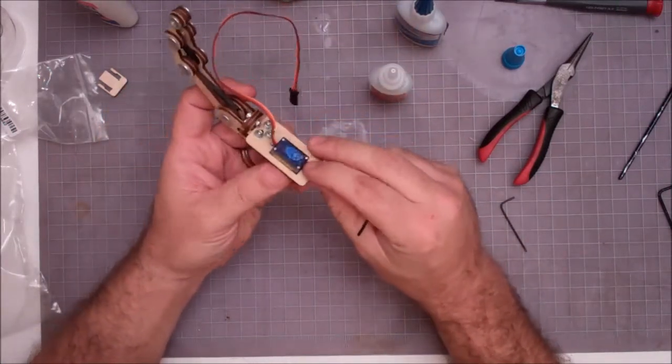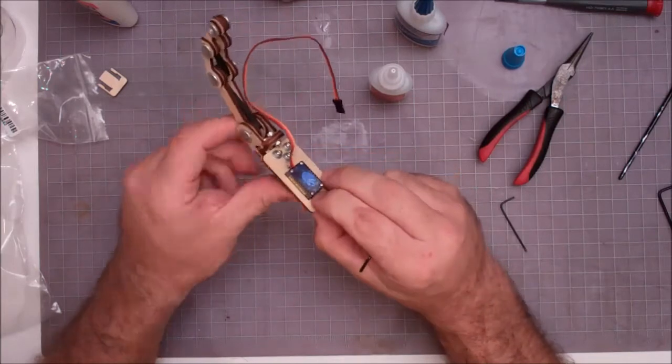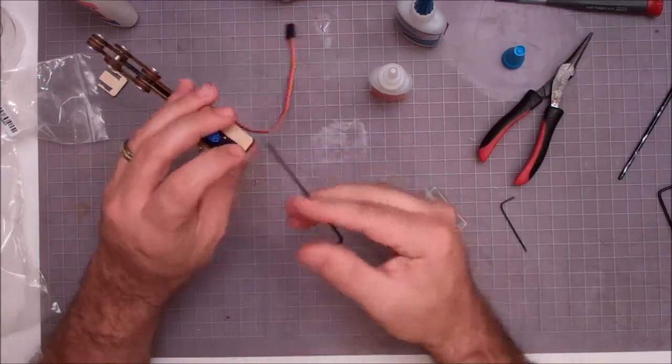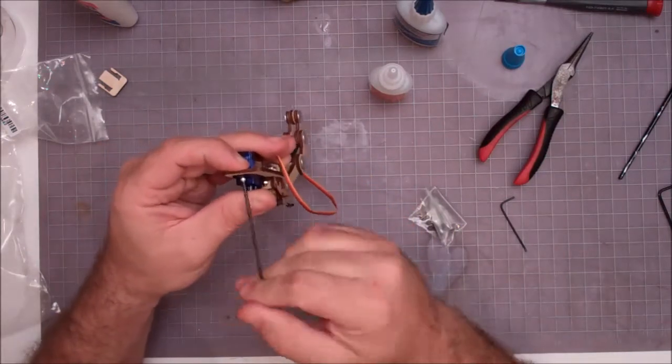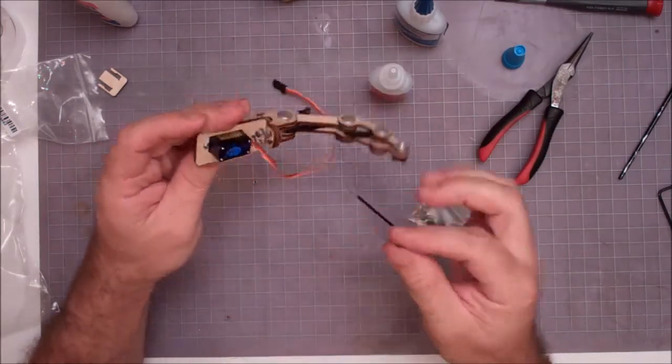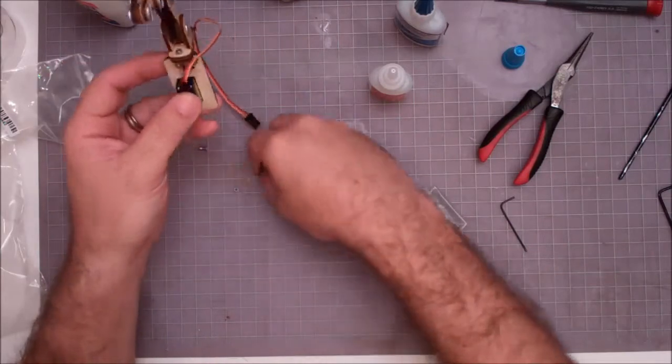So set them on there. I kind of drop the servo down so the screw drops below the surface of the wood. Line it up and just tighten it in. They're kind of a bear but just fiddle with them a little bit, you'll get them in there eventually.